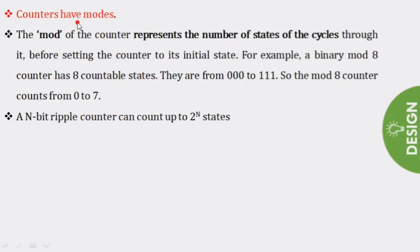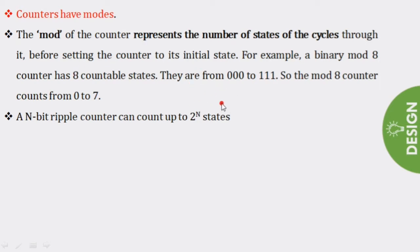Counters have modes. The mod of a counter represents the number of states or cycles of the counter. For example, a mod-8 counter counts up to 8 states — from 000 to 111, which is 8 states total. Mod-4 means 4 states, mod-10 means 10 states.